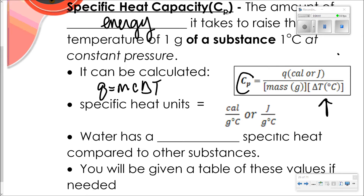This equation is rearranged to reflect specific heat capacity and its relationship to all other variables. The specific heat units are calories per gram·°C or joules per gram·°C, and those units determine the units for all other variables in the equation. Water, for example, has a very high specific heat capacity compared to other substances, and you'll be given a table of these values if needed.